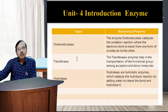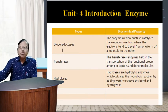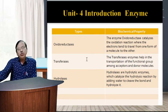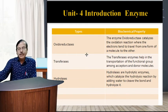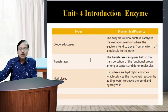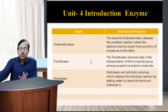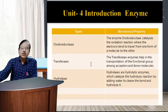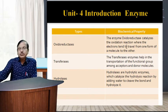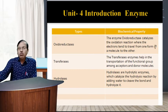The first class is oxidoreductases — enzymes involved in oxidation-reduction reactions. Two reactions take place: oxidation and reduction. In chemical terms: AH₂ + B → A + BH₂. One hydrogen is transferred from the A group to form BH₂. The biochemical property of oxidoreductases is that they catalyze oxidation-reduction reactions where electrons travel from one molecule to another.